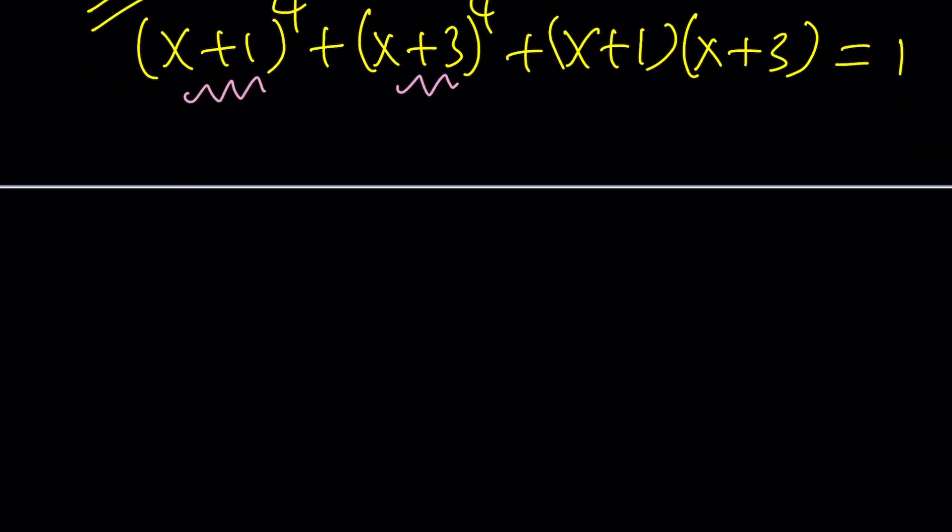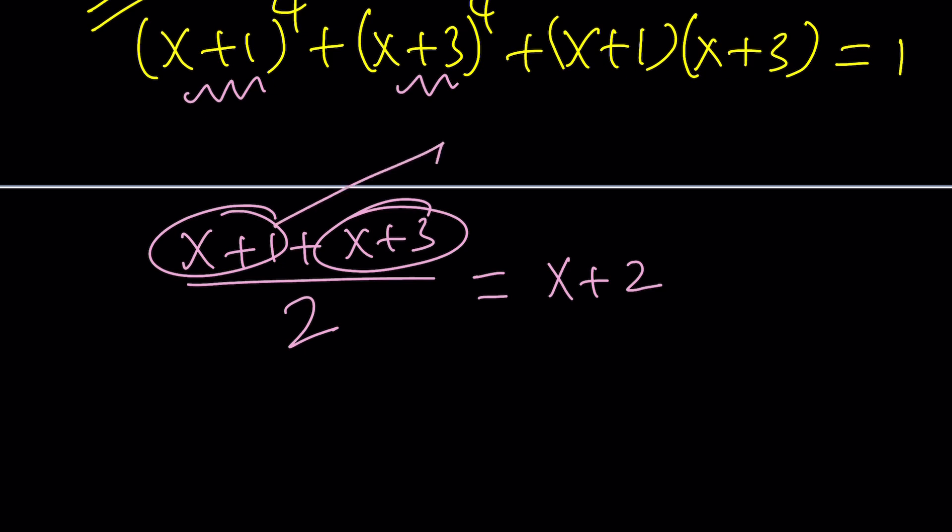You just take the average and that would turn out to be (x+2). Why? Because it's the same distance from this and from that. You get the idea? The average of 1 and 3 is 2. Great, that's it. So we should call this something. How about y?